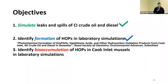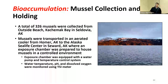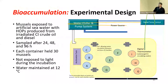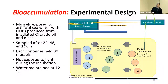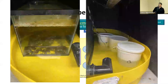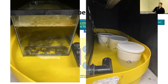For bioaccumulation of HOPs in mussels, we have some preliminary data. Mussels were collected here in Alaska, and we monitored pH and dissolved oxygen in chambers. We put the mussels in artificial seawater with HOPs generated from our irradiation experiments — produced from Cook Inlet crude oil and diesel — and collected samples after 24, 48, and 96 hours. Each container held 30 mussels; they were not exposed to light during incubation, and we maintained the water at 12°C.